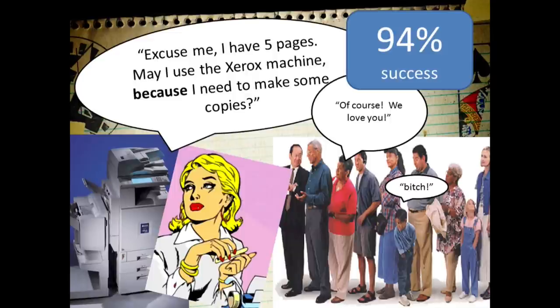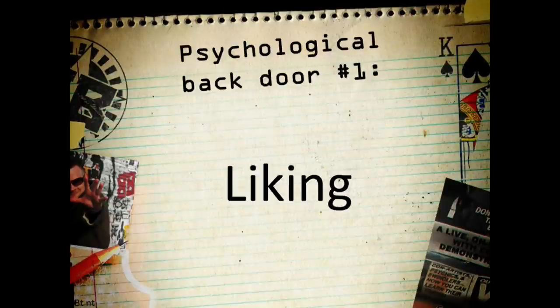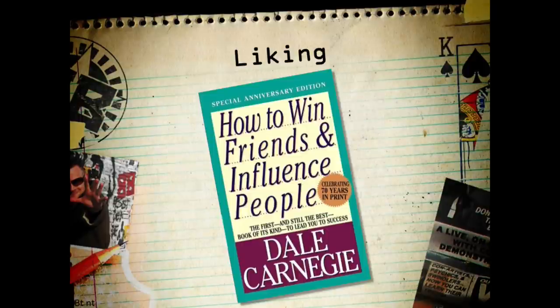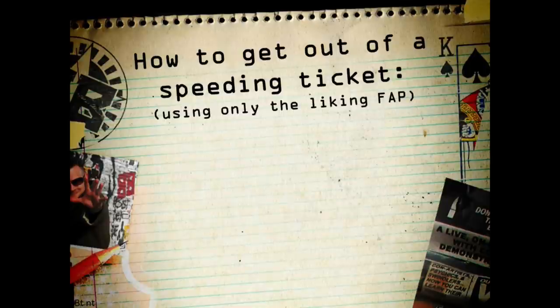We're going to take advantage of three psychological backdoors. The first is most obvious: when you like someone, you're most likely to grant them a favor. You can rely on natural charm, but there are also ways to induce a feeling of liking in another person. The oldest book — I think still the best — is How to Win Friends and Influence People. It's full of fantastic stuff: make sure to ask questions about them, people like to think and talk about themselves, use their name, remember their name, call them on birthdays.